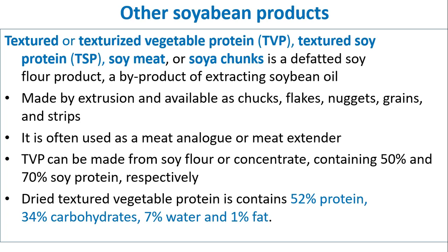Other soybean products include textured vegetable protein (TVP) and textured soy protein (TSP), also known as soy meat or soya chunks — a defatted soy flour product, a byproduct of extracting soybean oil. Made by extrusion, it is available as chunks, flakes, nuggets, grains and strips, and is often used as a meat analog or meat extender. TVP can be made from soy flour or concentrate containing 50% and 70% soy protein respectively. Dry textured vegetable protein contains 52% protein, 34% carbohydrates, 7% water and 1% fat.